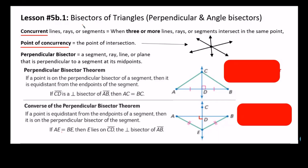Hello and welcome. Today's lesson is going to be about bisectors of triangles. There are two types of bisectors: the perpendicular bisectors and the angle bisectors. These are going to be our objectives today — to learn about both of them.